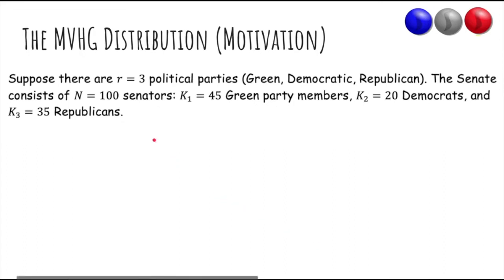Okay, so now let's talk about the multivariate hypergeometric. So suppose that there are three political parties and you have 100 senators, like 45 Green Party members, 20 Democrats, and 35 Republicans.